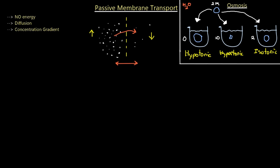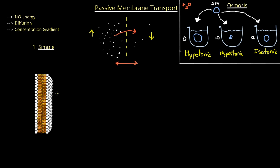Now let's switch to passive membrane transport and how it actually occurs. There are two ways: simple passive membrane transport and facilitated passive membrane transport. In simple passive transport, no proteins are needed. Molecules approach the phospholipid bilayer and seep through to the other side because of the concentration gradient. However, it does not let everything through — it filters molecules based completely on size and charge.